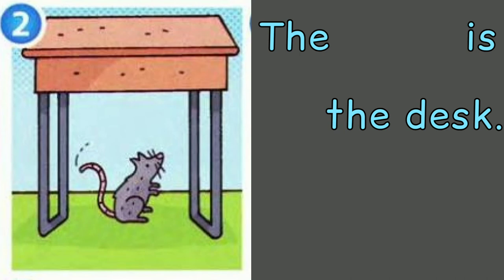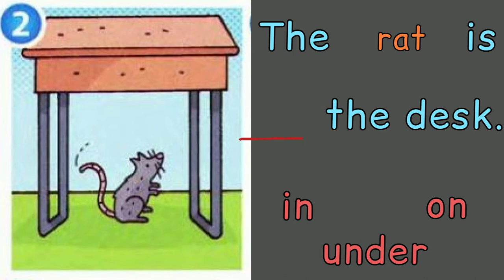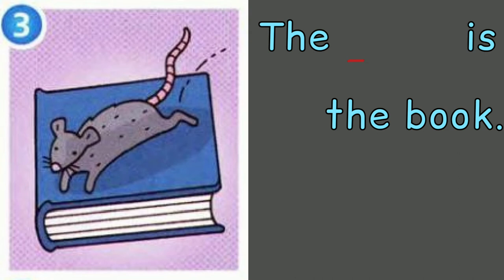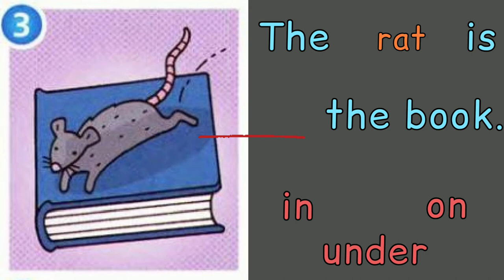Number 2. Look at this picture. What animal is in the picture? Yes, the animal is a rat. The rat is under the bag. It's another rat. Where is this rat? Is the rat on the book, in the book, or under the book? The rat is on the book.